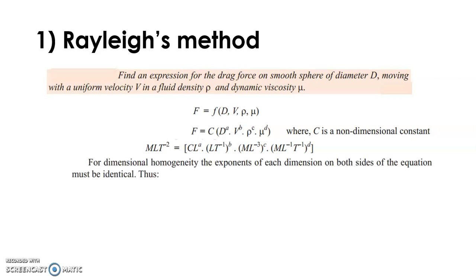Since the equation is dimensionally homogeneous, we equate the powers of M, L, and T on both sides. Equating powers of M: 1 = c + d. For L: 1 = a + b - 3c - d. For T: -2 = -b - d.